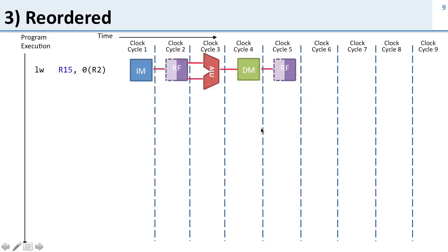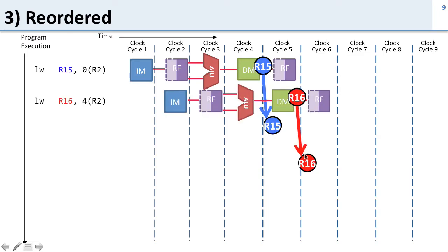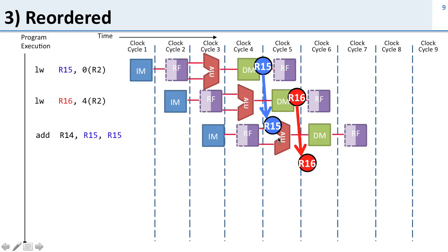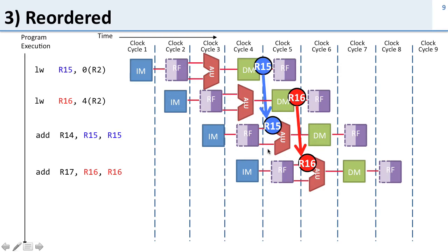With reordering, we do the first load word (data ready at end of memory stage), then the second load word (its data also ready by end of memory stage). Now we have something useful in the delay slot — we do our addition, forwarding data from memory to the ALU in the right cycle, and the same for the next add. By moving instructions around we take full advantage of forwarding so the data is available in the next cycle.